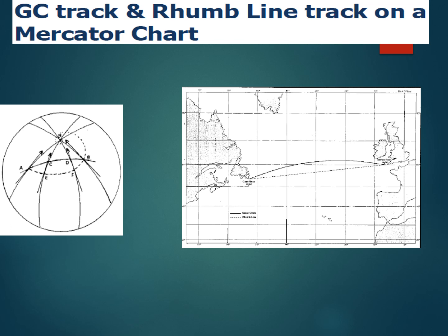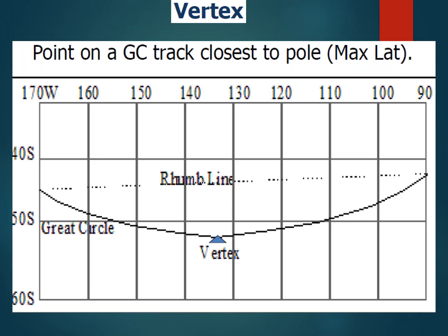Here the great circle track and the rhumb line track are drawn on a Mercator chart. The great circle course that appears as a straight line on the surface of the earth or on a gnomonic chart appears as a curved line on the Mercator chart. The curved line you see is actually the great circle, and the dotted line is the rhumb line. You can identify a Mercator chart because the meridians are drawn parallel to each other and equidistant, but you cannot plot a great circle course on it because it comes as a curve.